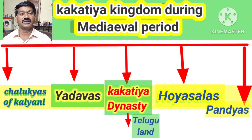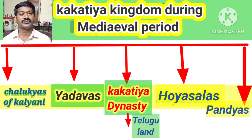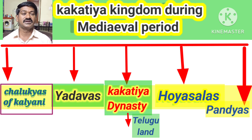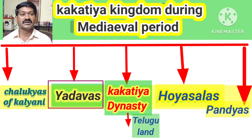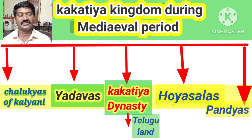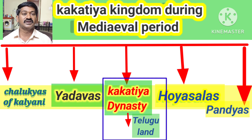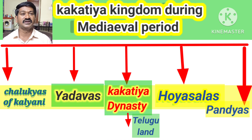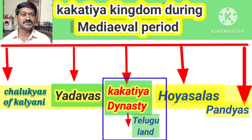During the medieval period, in South India, five regional kingdoms emerged. These were the Chalikyas of Kalyani, Yadavas, Kakathiya Kingdom, Hoysalas, and Pandyas. The Kakathiya Kingdom belonged to the Telugu land area and was located in the Andhra Pradesh and Telangana region.